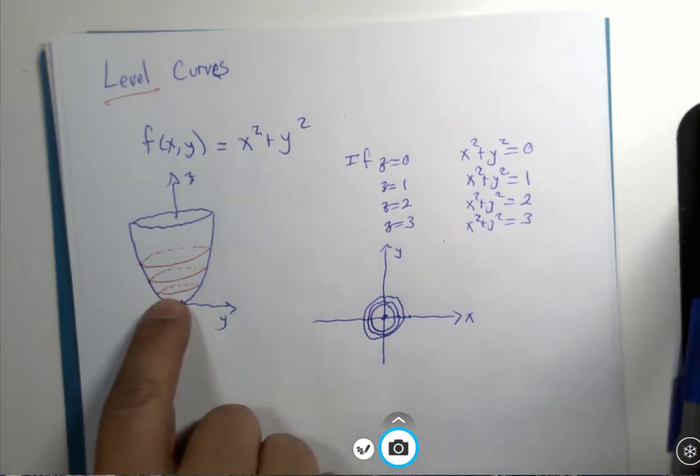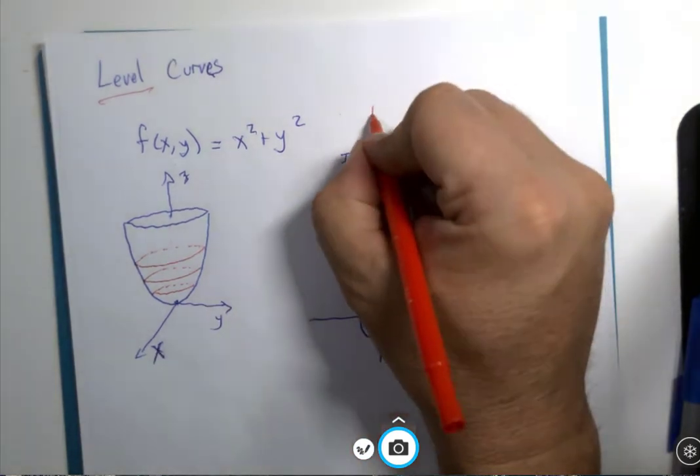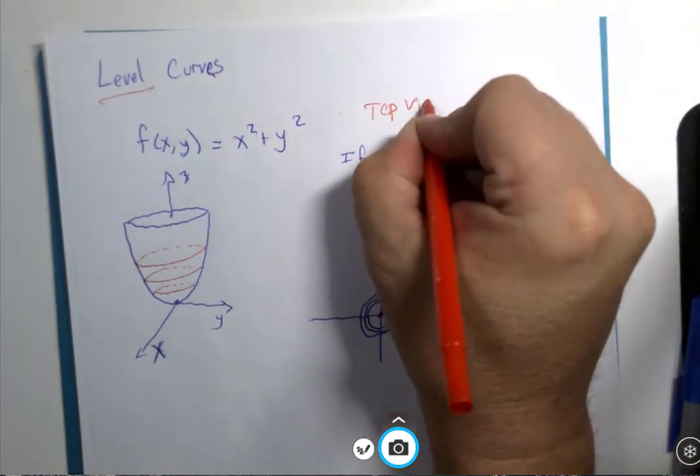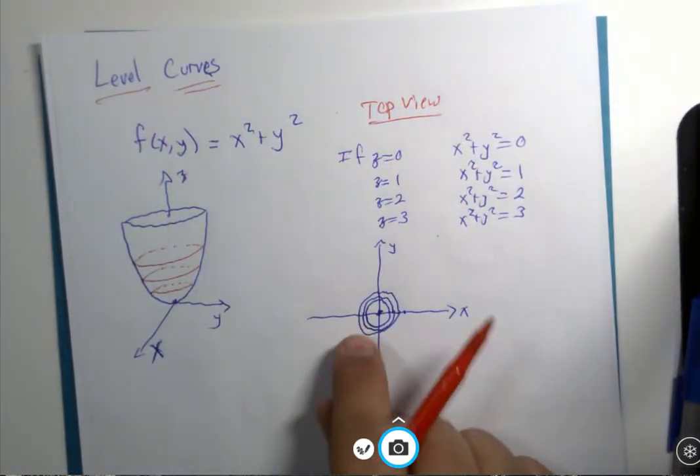And that would represent the circle that is exactly 3 units up on this parabola bowl. So we're not going to be graphing this, what we're going to be graphing is this top view, and looking at the various curves that we would see from the top view.